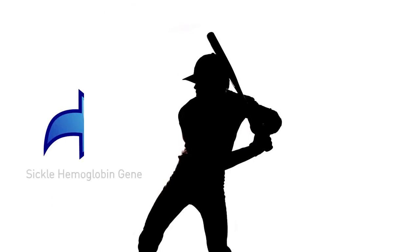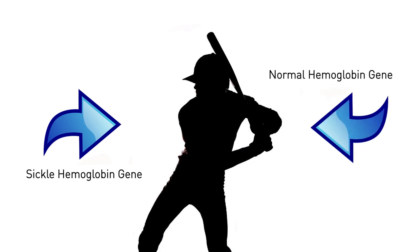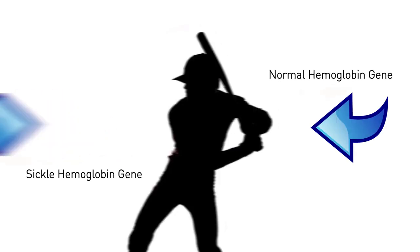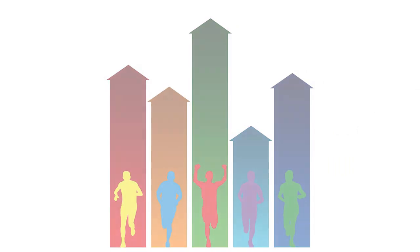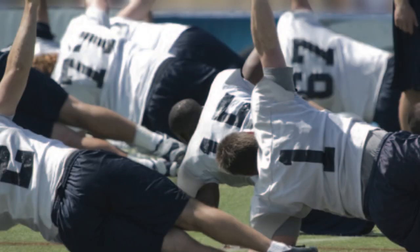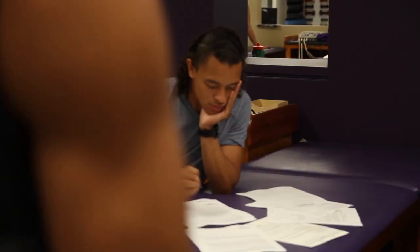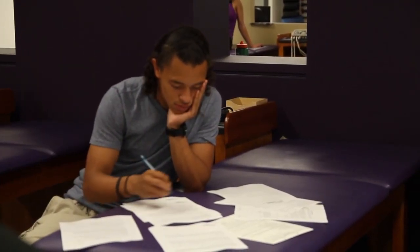Sickle cell trait occurs when an individual inherits a gene for sickle hemoglobin from one parent and a gene for normal hemoglobin from another parent. The sickle hemoglobin gene is more common in people of African, Mediterranean, Middle Eastern, or Far Eastern descent. Sickle cell trait is present in athletes at all levels of competition and ethnicities, including professional and Olympic sports. Because sickle cell trait does not make you sick, it is possible for you to have it and not know it.